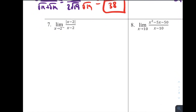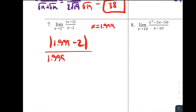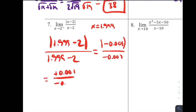For number 7, the limit as x approaches 2 from the left of |x−2|/(x−2), I recommend a numerical approach. Picking 1.999: |1.999−2| / (1.999−2) = |−0.001| / (−0.001) = 0.001 / (−0.001) = −1. So the answer for problem 7 is −1.